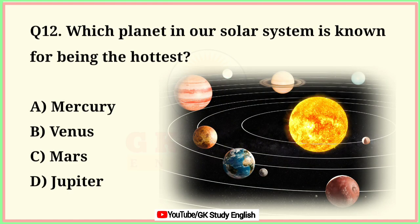Question number 12. Which planet in our solar system is known for being the hottest? A. Mercury. B. Venus. C. Mars. D. Jupiter. Correct answer is option B. Venus.